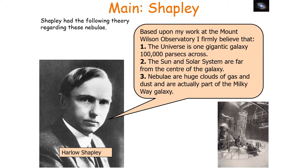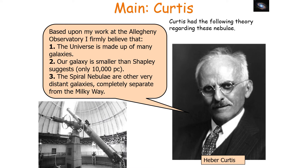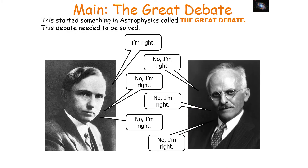Enter the astronomers Shapely and Curtis. Shapely believed that the universe is one gigantic galaxy 100,000 parsecs across, that the solar system is far from the centre, and that nebulae are huge clouds of gas and dust part of the Milky Way. Curtis, on the other hand, believed the universe is made from many galaxies, our galaxy is only 10,000 parsecs across, and the spiral nebulae are other very distant galaxies completely separate from the Milky Way.